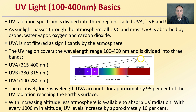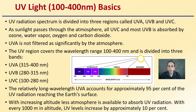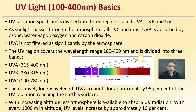Looking specifically at UV light, starting at the 100 to 400 nanometer range. The UV radiation spectrum is divided into three regions: UVA, UVB, and UVC. As sunlight passes through the atmosphere, all of the UVC and most of the UVB is absorbed by the ozone, water vapor, oxygen, and carbon dioxide, meaning plants are exposed to it less than if they were growing outside of Earth, say at the International Space Station. UVA is not filtered as significantly by the atmosphere and is able to penetrate to the surface to a higher degree. UVA covers 315 to 400 nanometers, UVB 280 to 315, and UVC 100 to 280 nanometers. UVA accounts for approximately 95% of the UV radiation reaching Earth's surface.